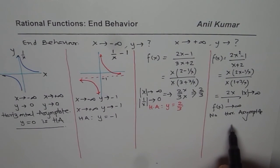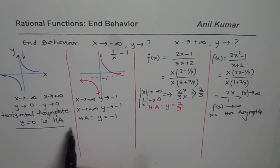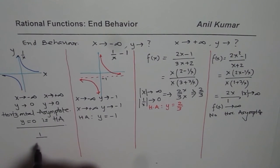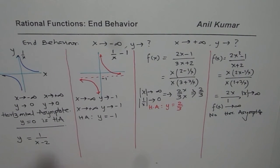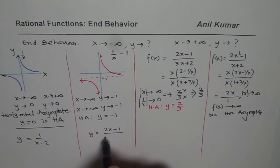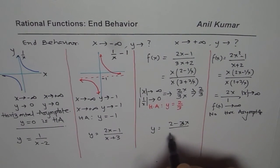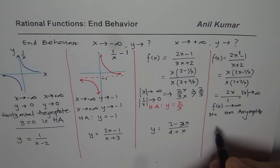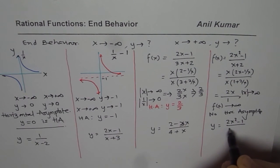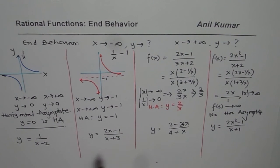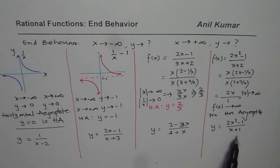So a rational function could approach a value or it may not. If it is approaching a value, then we say a horizontal asymptote exists. Here are a few practice questions: y equals 1 over (x minus 2); y equals (2x minus 1) over (x plus 3); y equals (2 minus 3x) over (4 plus x); and y equals (2x squared minus 1) over (x plus 1). Find the horizontal asymptotes for these rational functions and check with the solutions in this playlist. Thank you and all the best.